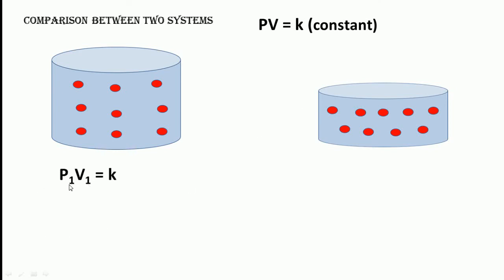Remember, PV equals k constant. System one has P1V1 as the pressure and volume, and system two has P2V2 as the pressure and volume. We can compare these two as P1V1 equals P2V2.